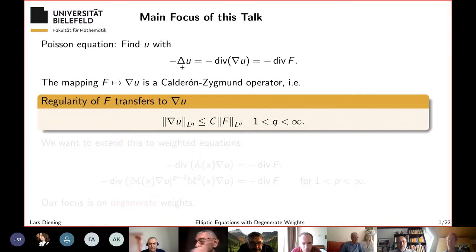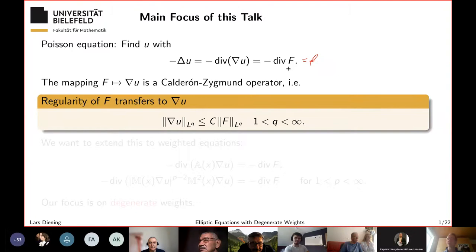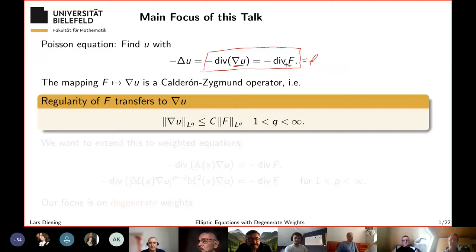Let's look at the Laplace equation: minus Δu equals some force. In our context, it's best if it is given in divergence form — not like little f but capital divergence of capital F. If you write it as divergence of gradient u equals divergence of F, then gradient u and F are basically on the same scaling level from the PDE point of view. You can look at the operator going from the force term to the gradient, and this is a Calderón–Zygmund operator, so you have a mapping from L^q to L^q.